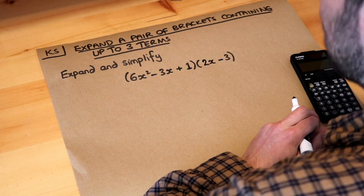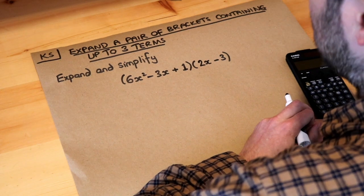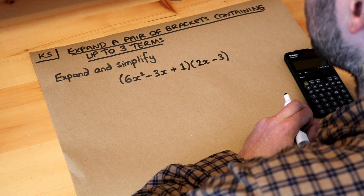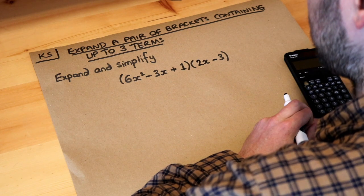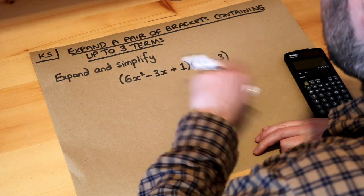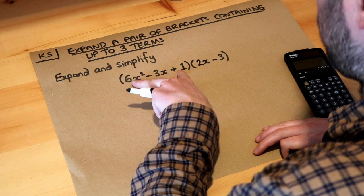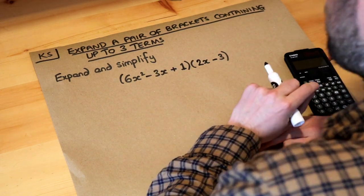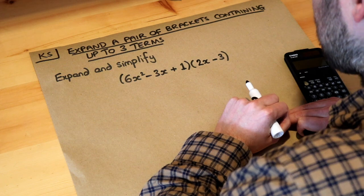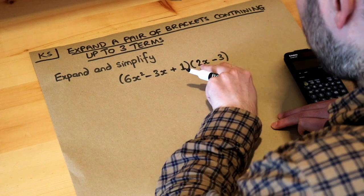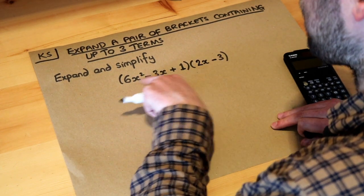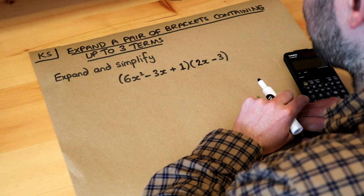Hello and welcome to Dr. Ross Mass's key skill video on expanding a pair of brackets containing up to three terms. We want to expand and simplify this expression here. We've got a product of two brackets, and what makes this harder than some of the previous questions we've done is that we've got two terms in this bracket, but we actually have three terms in the other bracket.